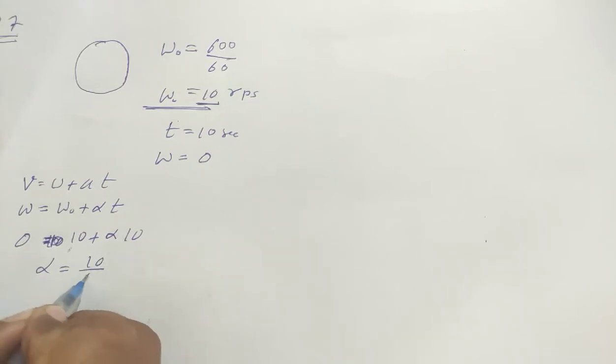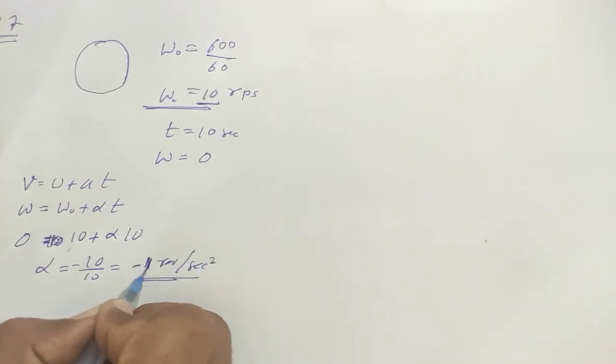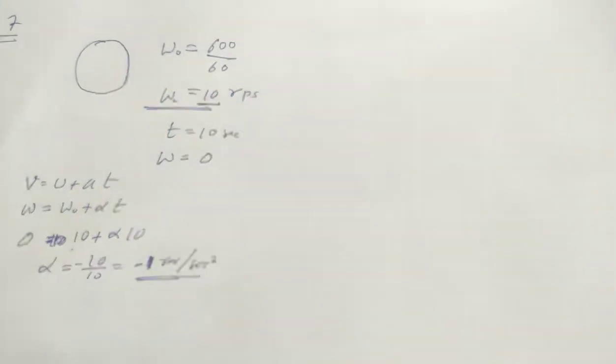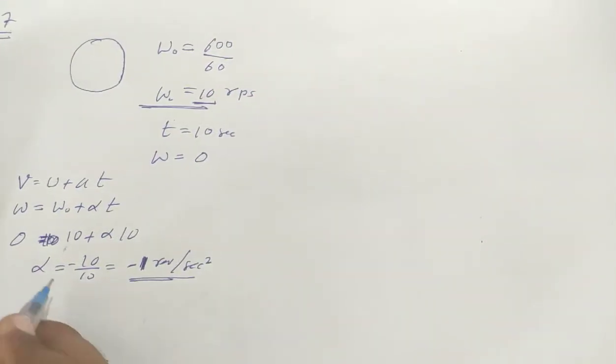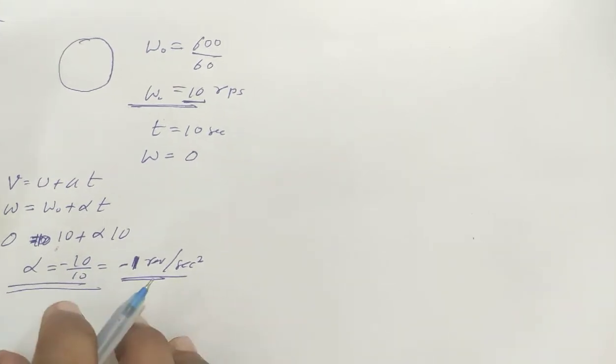So 0 equals 10 plus alpha times 10. Therefore alpha equals minus 10 by 10, which is minus 1 revolution per second squared. The answer is minus 1 revolution per second squared. Now for the second question: